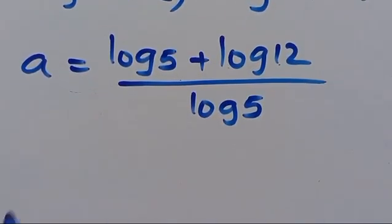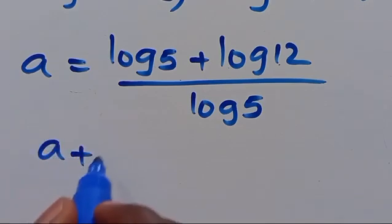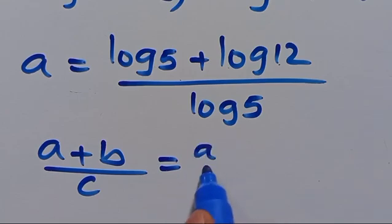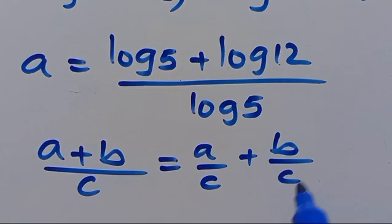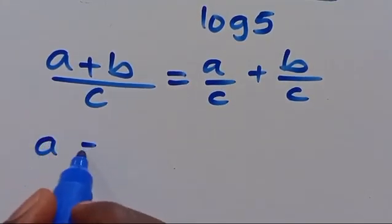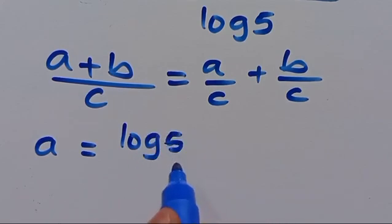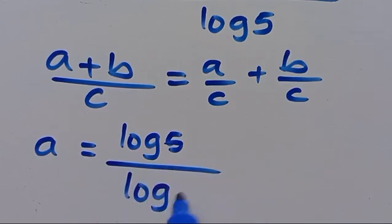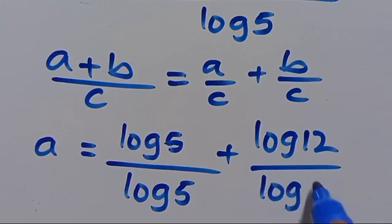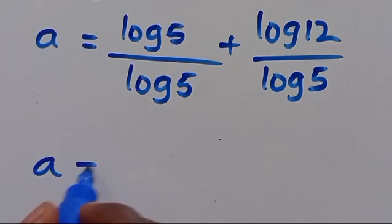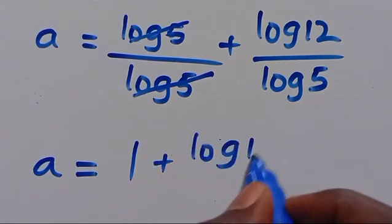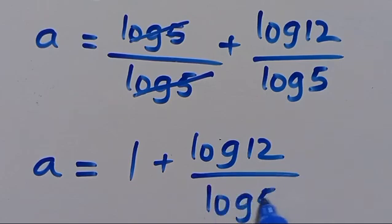Also recall that when we have A plus B divided by C, where A, B, and C are constants, we can write this as A over C plus B over C. Applying that here, we get A equals log 5 divided by log 5, plus log 12 divided by log 5. Since log 5 divided by log 5 equals 1, this gives A equals 1 plus log 12 divided by log 5.